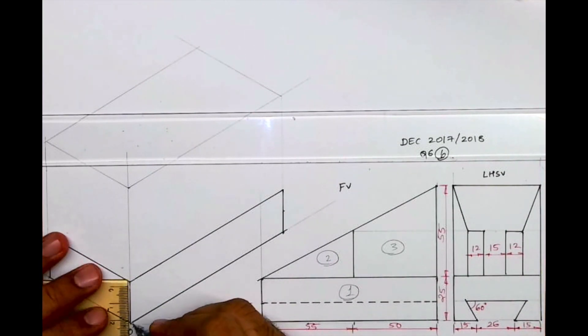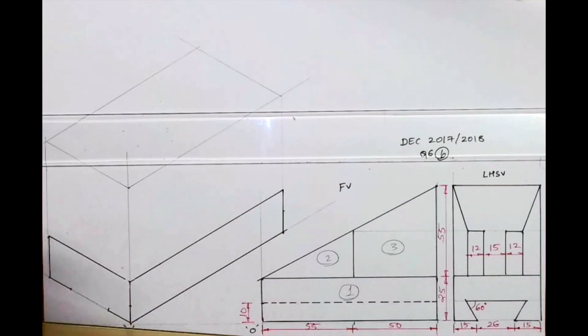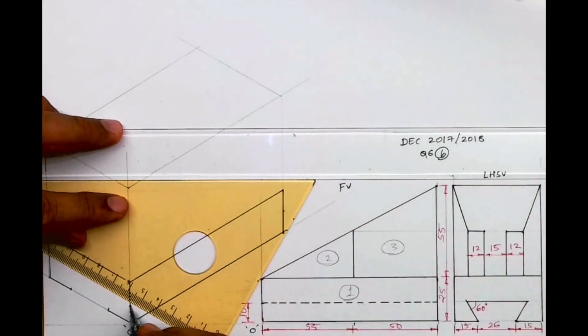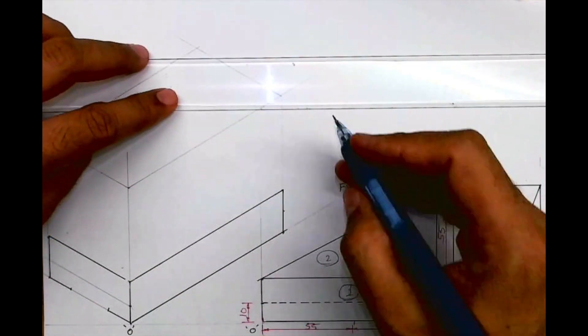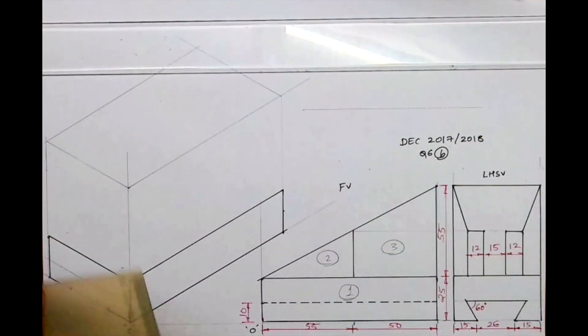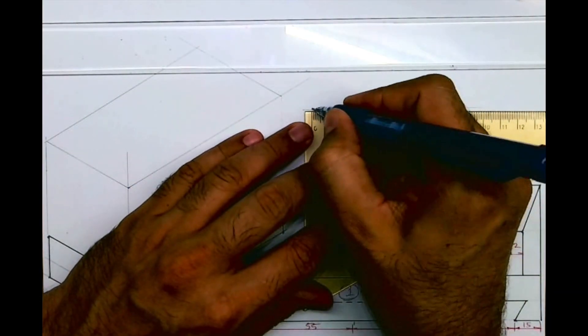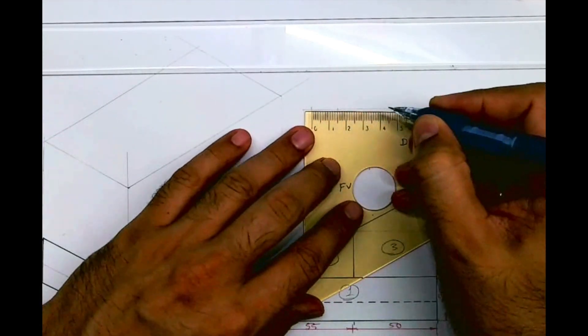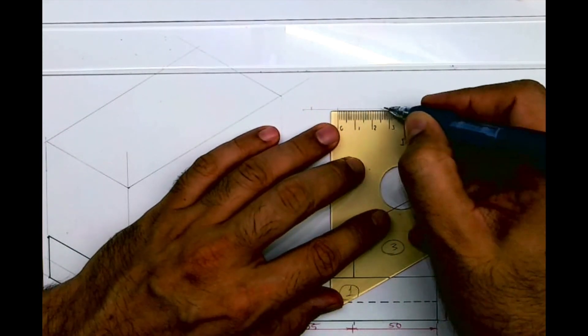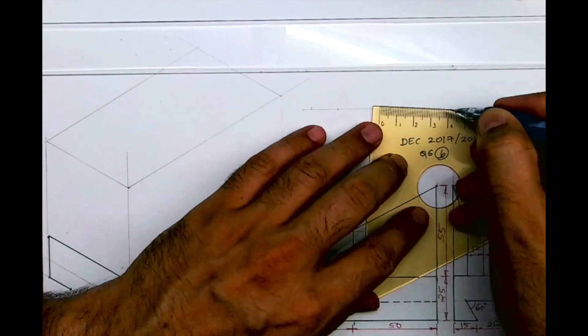After that, we need to draw that dovetail slot, so I will go up by 10 and I will draw that line. Now if you see this, this is a slope, right? An inclined surface. So we need to draw it outside and then we need to transfer linear distance. So draw it outside, you mark distance 15, 26, and 15.